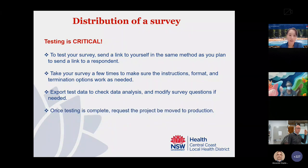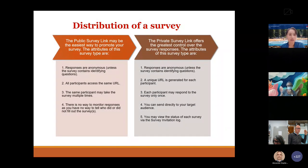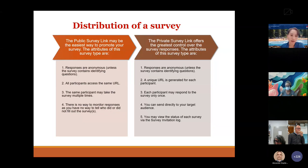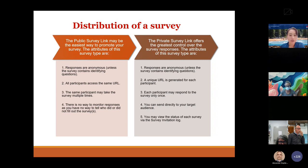Once testing is complete, request the project be moved to production mode and do not send out the survey until then. To summarize: the public survey link is the easiest way to promote your survey — responses are anonymous, anyone can access the same URL, and the same participant may take the survey multiple times with no way to monitor who responded. For the private survey link, a unique URL is generated for each participant, each participant may respond only once, you can send directly to your target audience, and you may view the status of each survey via the survey invitation log.